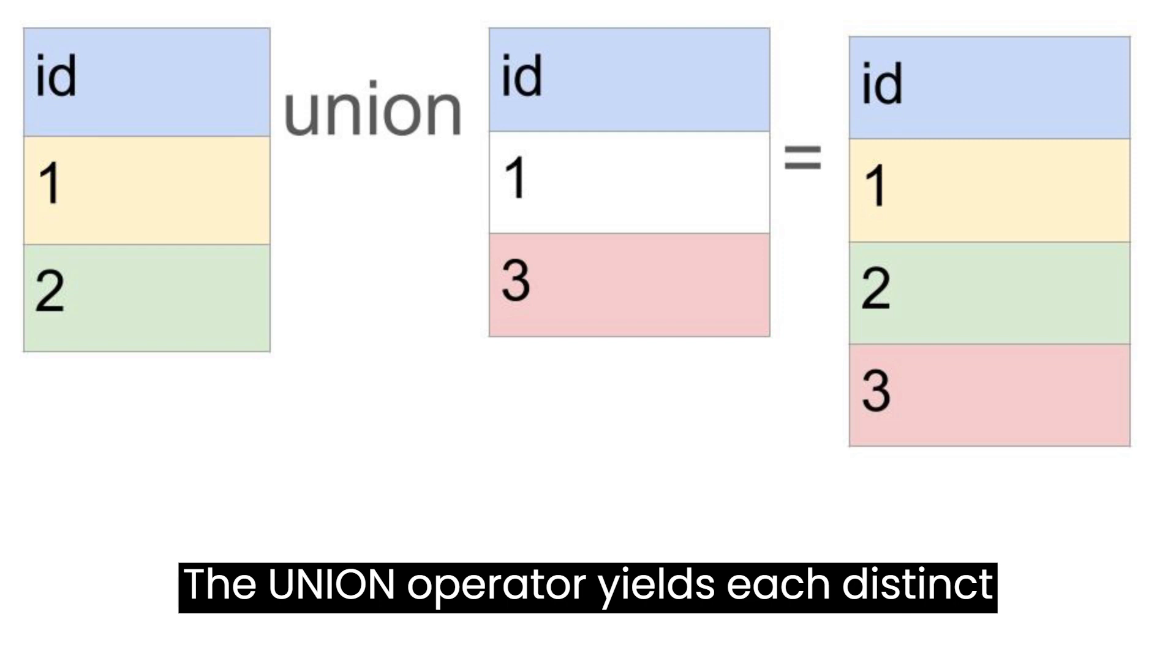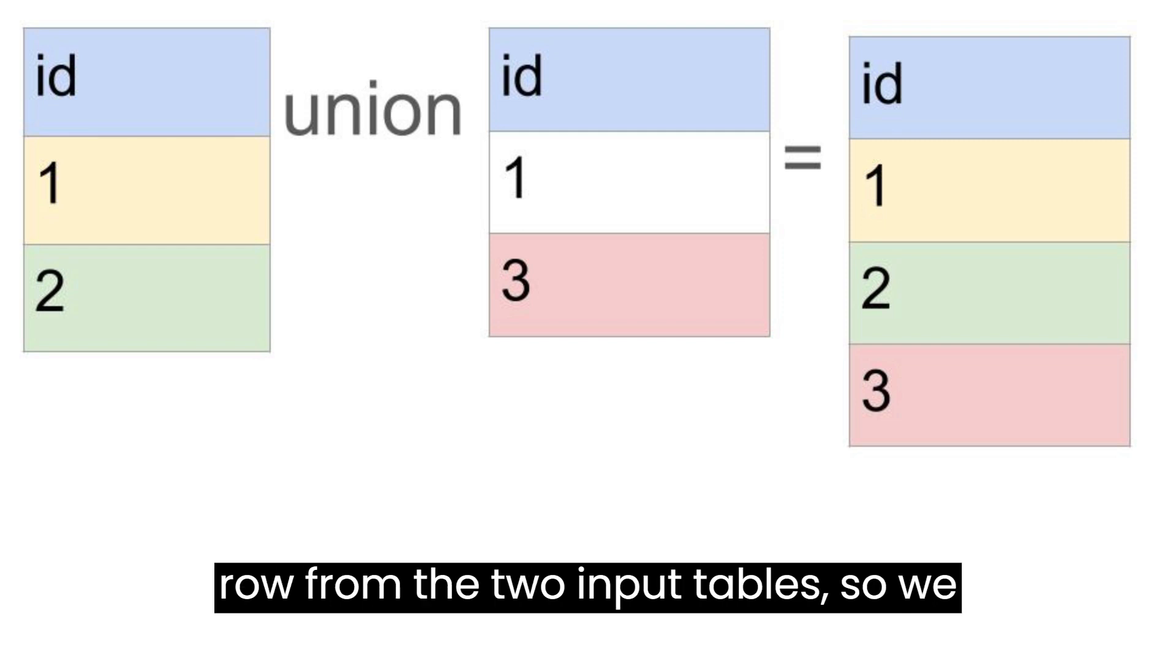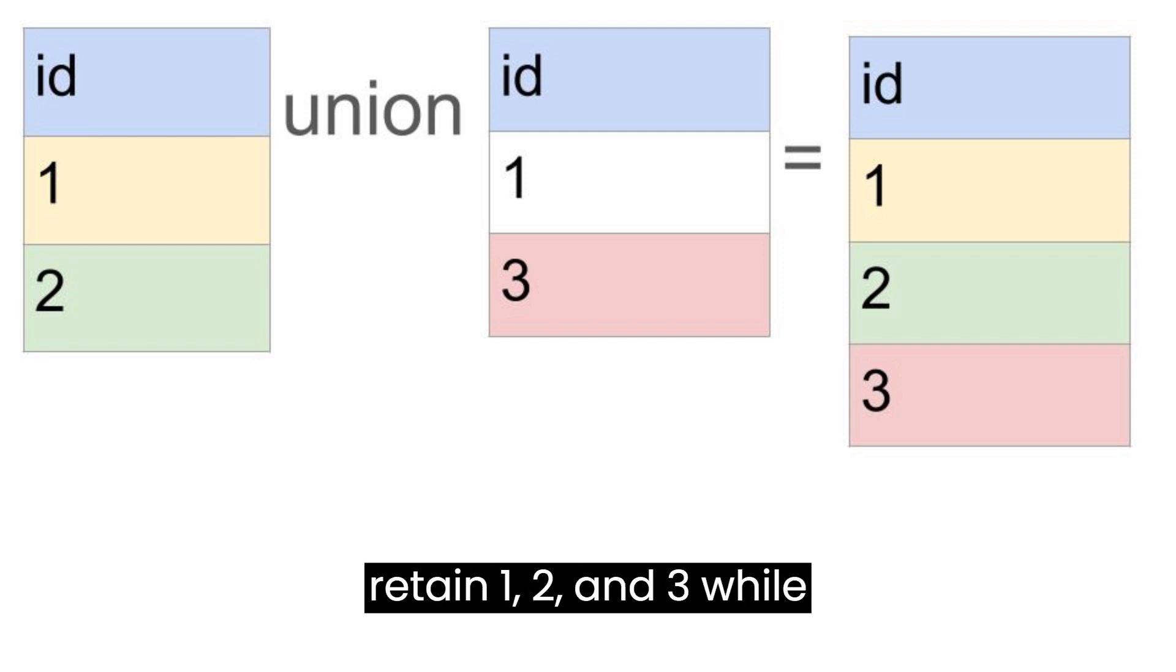The UNION operator yields each distinct row from the two input tables, so we retain 1, 2, and 3 while removing the duplicate of 1.